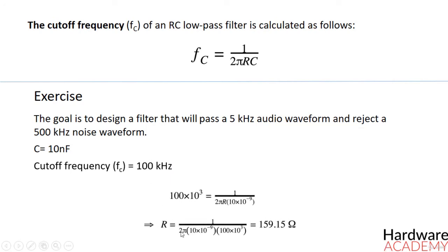As you can see here, after inserting all the values that we already know, we get a resistance of 159 ohms. As a result, a 159 ohm resistor combined with a 10 nF capacitor will give us a filter that closely approximates the desired frequency response.